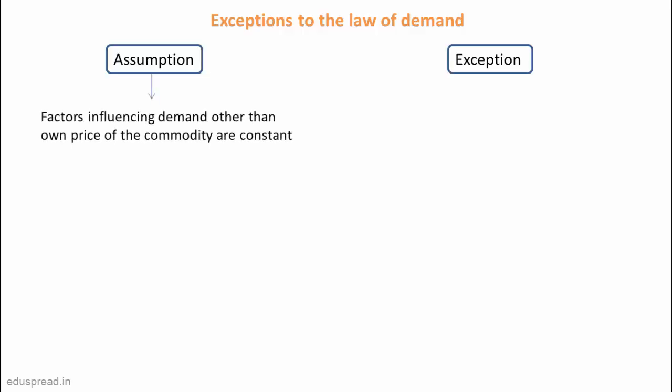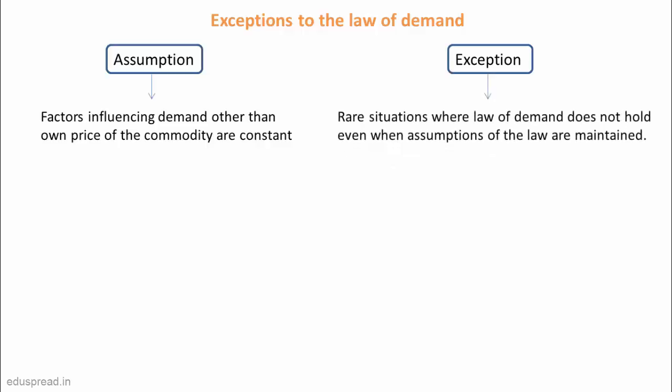While discussing the Law of Demand, we assume that the factors that affect the quantity demanded of a good other than its own price remain constant. So, other factors remaining constant is the assumption that we take while talking about the Law of Demand. On the other hand, an exception refers to those rare situations where the Law of Demand does not hold even when the assumptions of the Law are maintained.